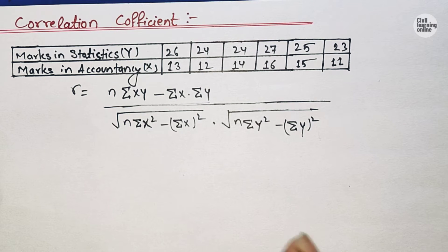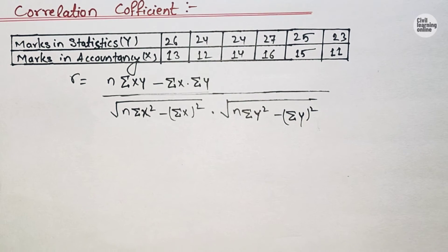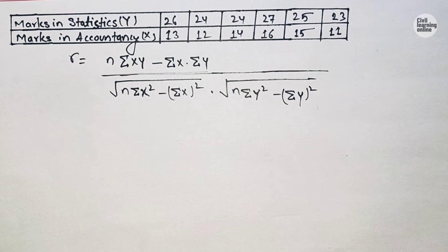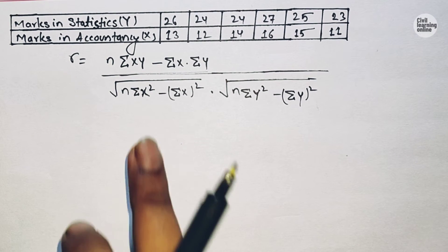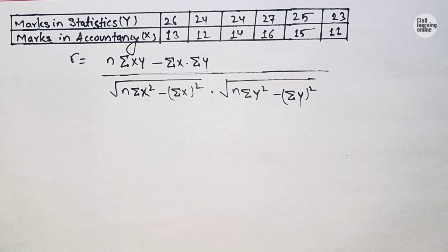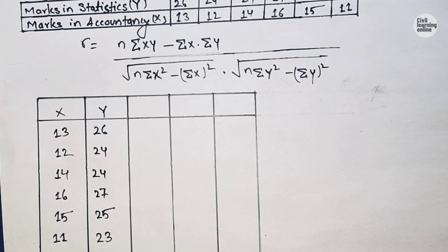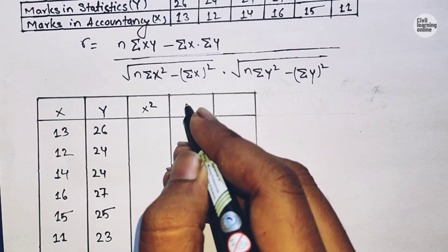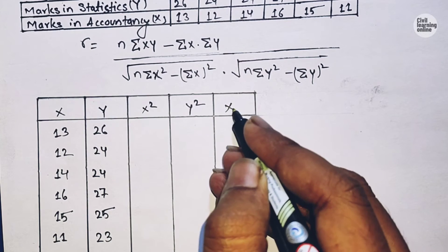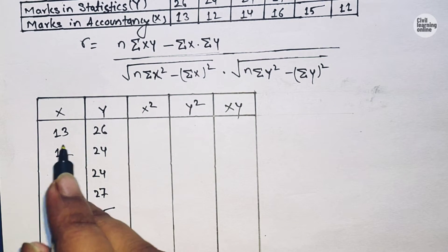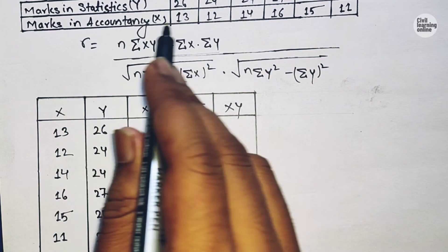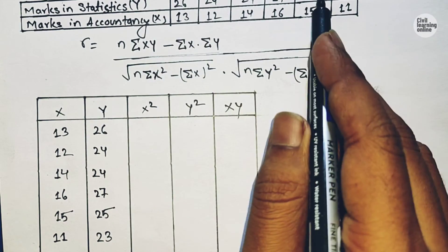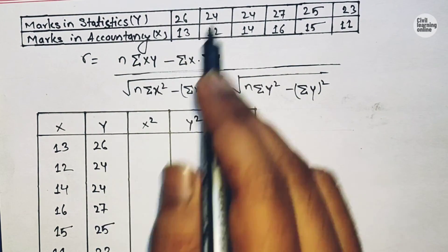To find these values we need to draw a table, and that will be the beginning of the solution to this problem. Here is the table in which I will be calculating X square, Y square, and XY. I have plotted the values of X and Y accordingly.